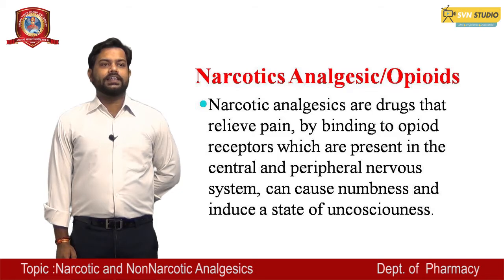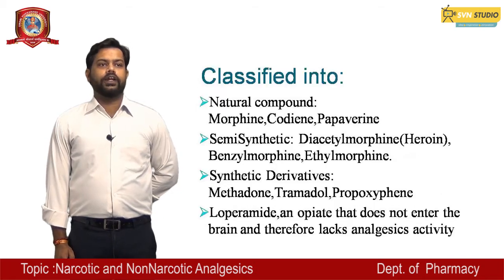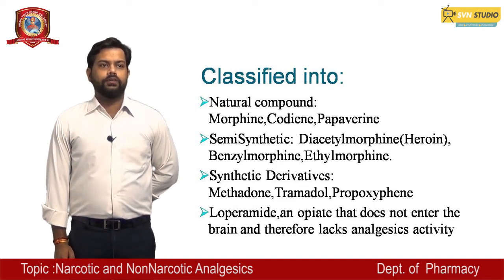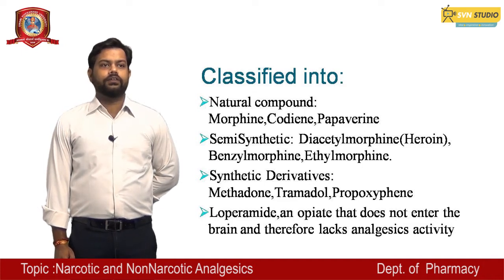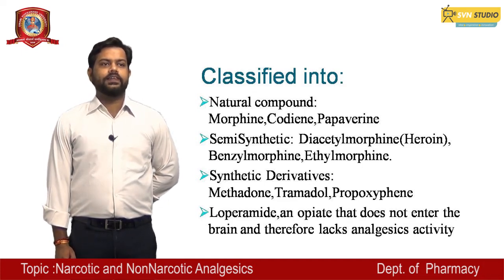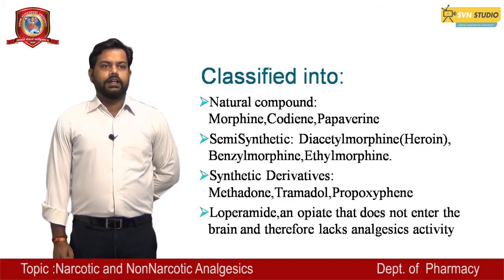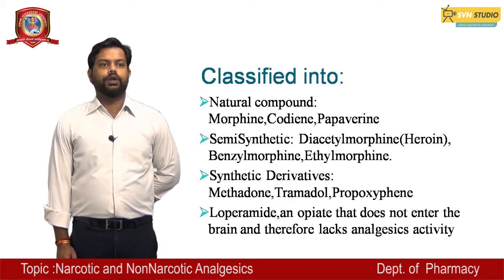Narcotics may be classified into the following compounds. First, natural compounds include morphine, codeine, and papaverine. In semi-synthetic compounds we have diacetylmorphine, that is heroin, benzylmorphine, and ethylmorphine.